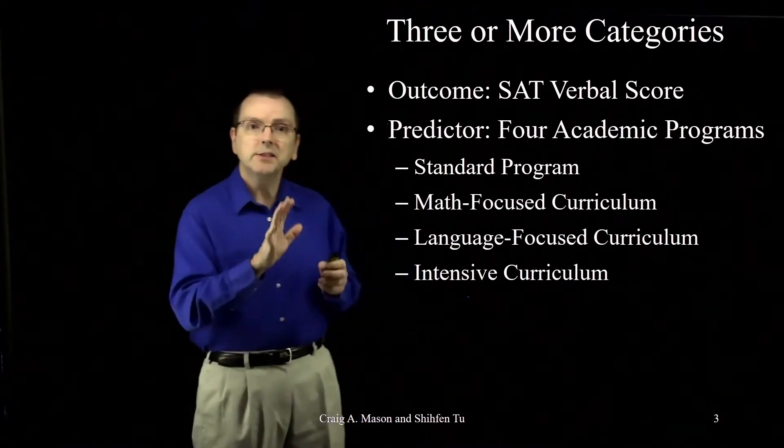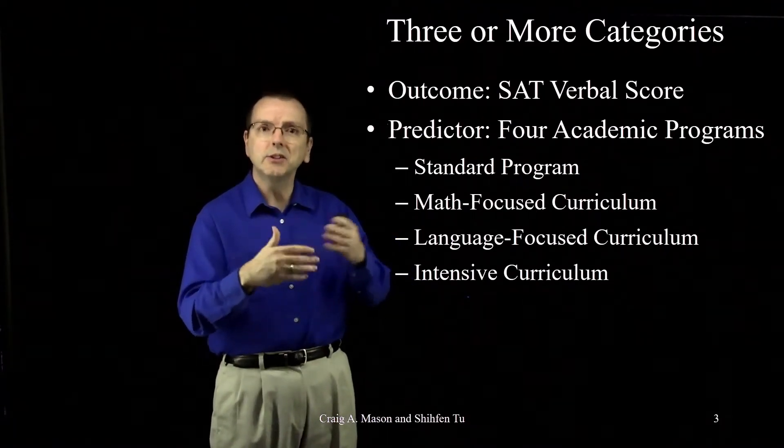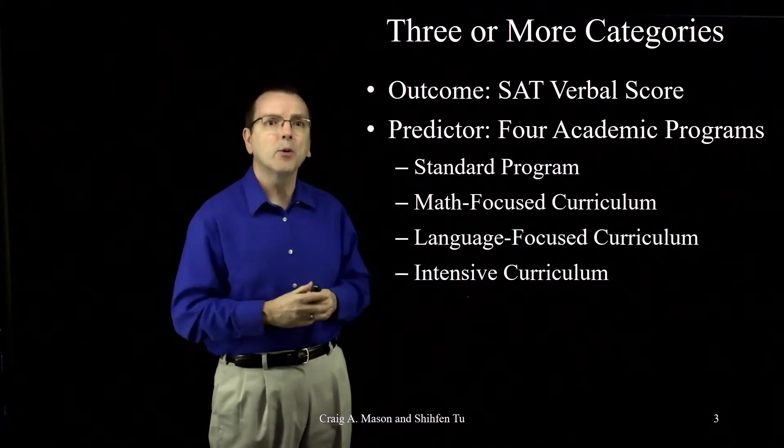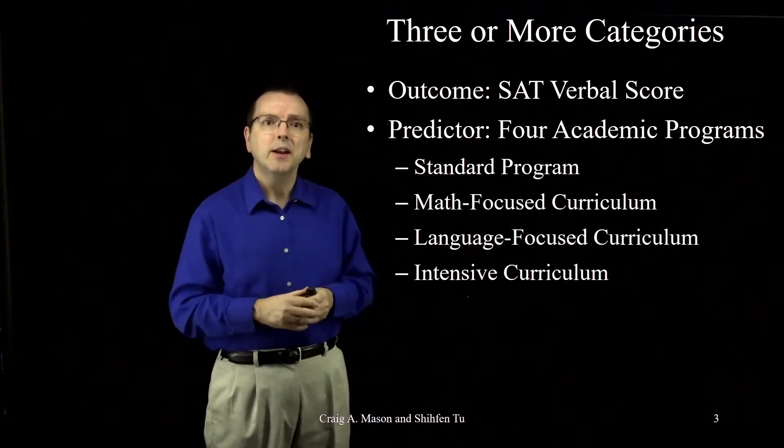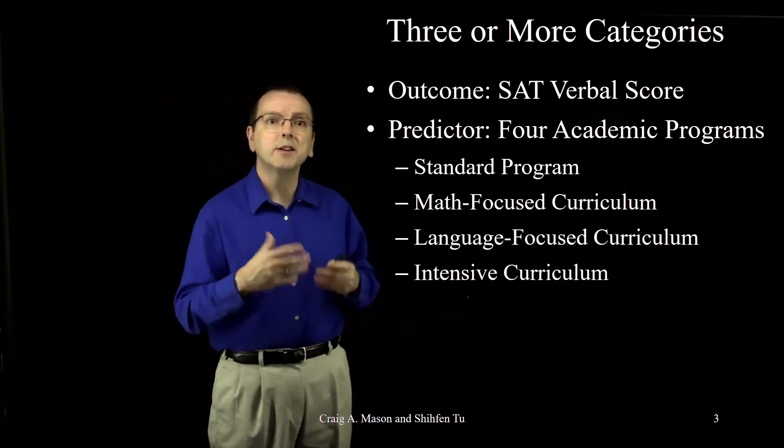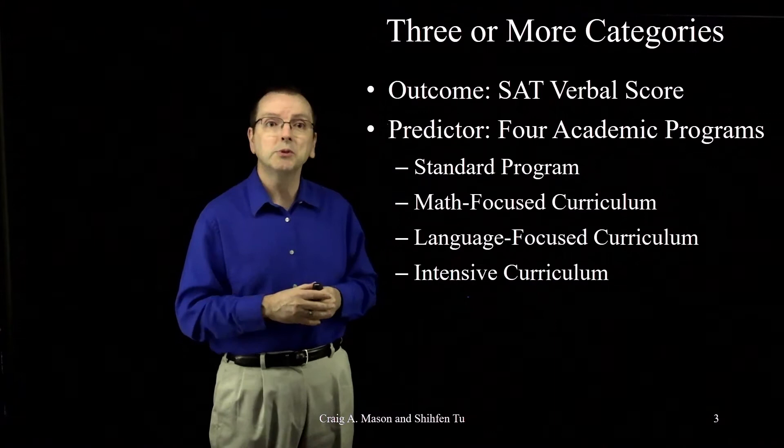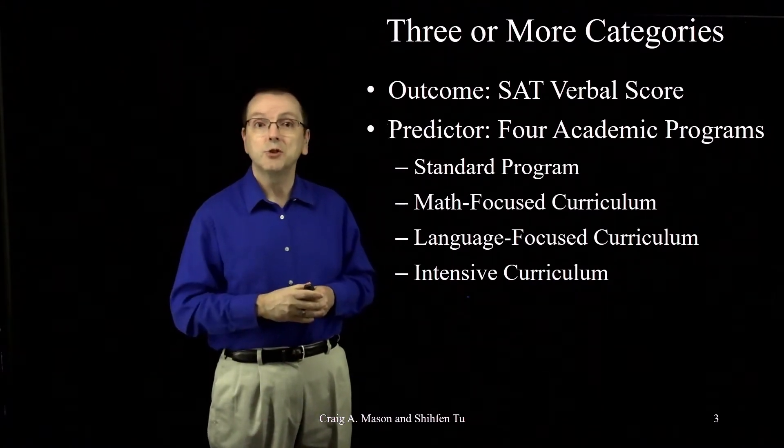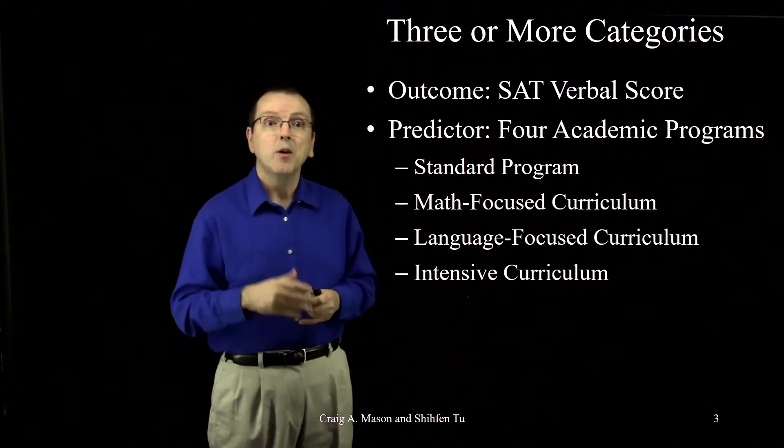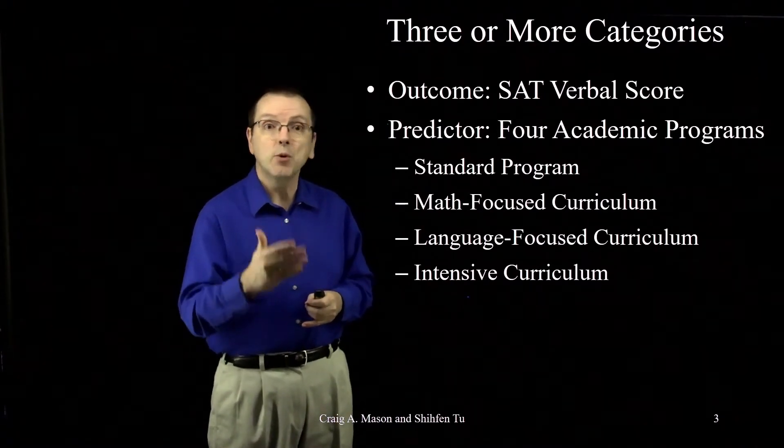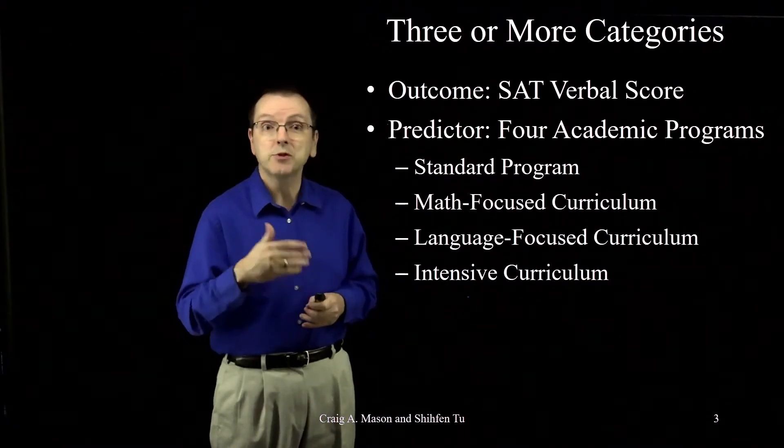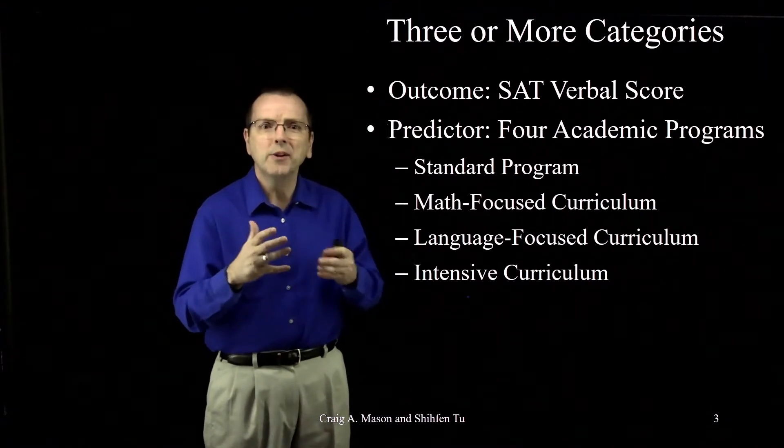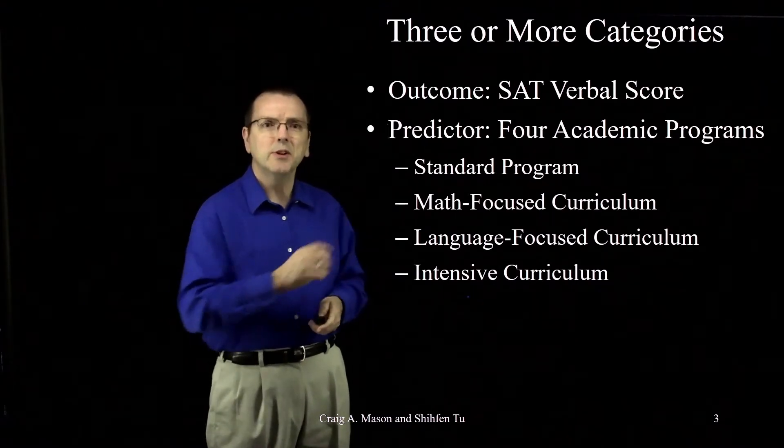This starts to take us into more classical categorical variables that can have several different categories within them. For this example, let's say I want to see whether there are differences in SAT verbal scores based on four different academic programs: a standard academic program, a math-focused curriculum, a language-focused curriculum, or an all-around intensive curriculum. So there's our four groups.